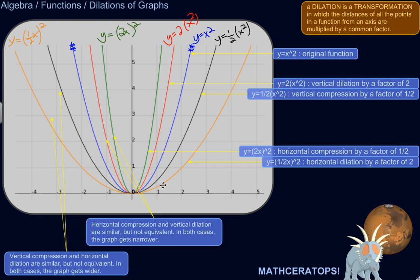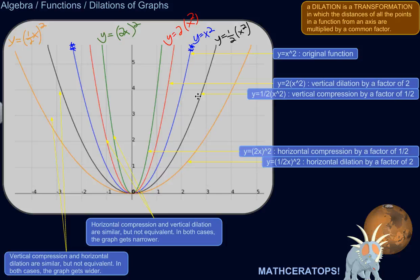A dilation is a transformation in which the distances of all the points in the graph of a function from an axis — like the y-axis for horizontal dilation or the x-axis for vertical dilation — are multiplied by a common factor. Like, if the points were a certain distance away, you take that distance and multiply it by 2 or multiply it by 3. Dilations are also called vertical or horizontal stretches, and some people refer to when the graph shrinks or is compressed as a form of dilation. So, dilation is a catch-all phrase.